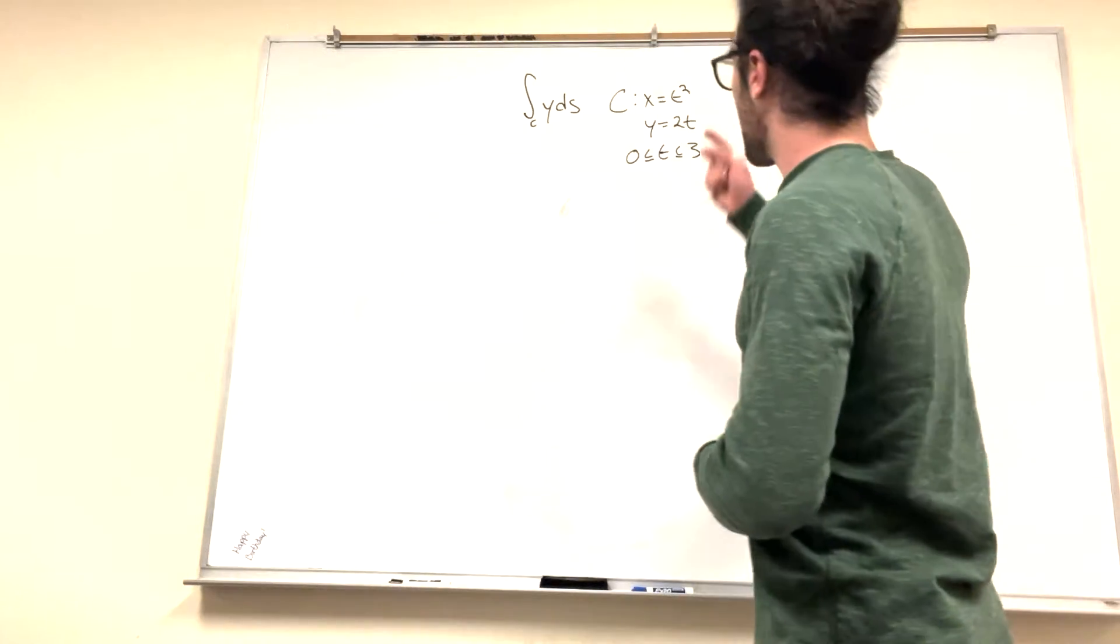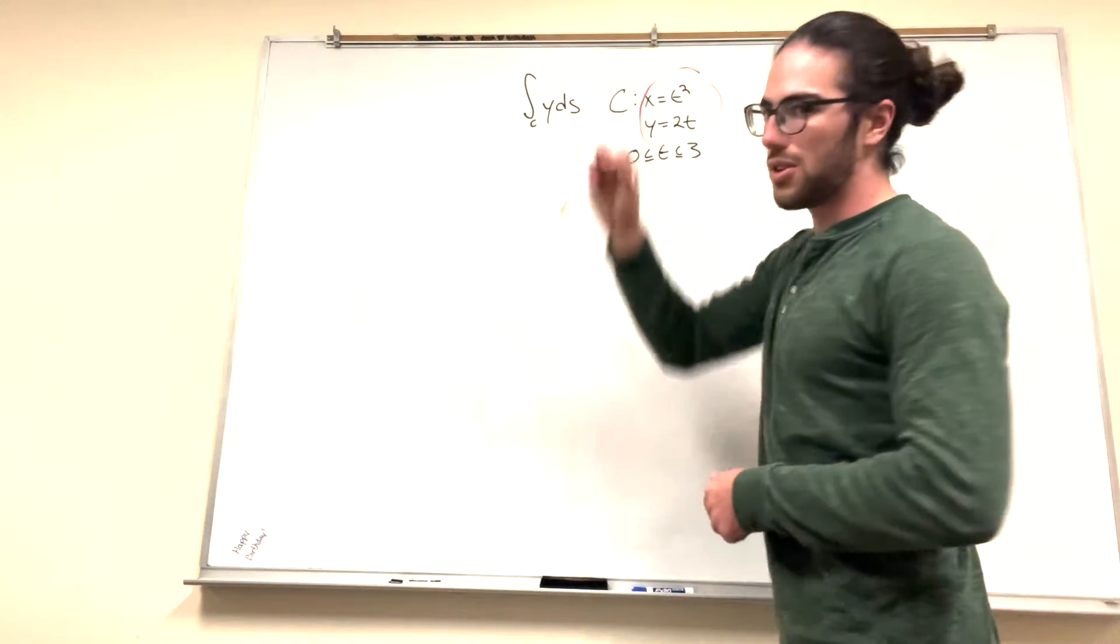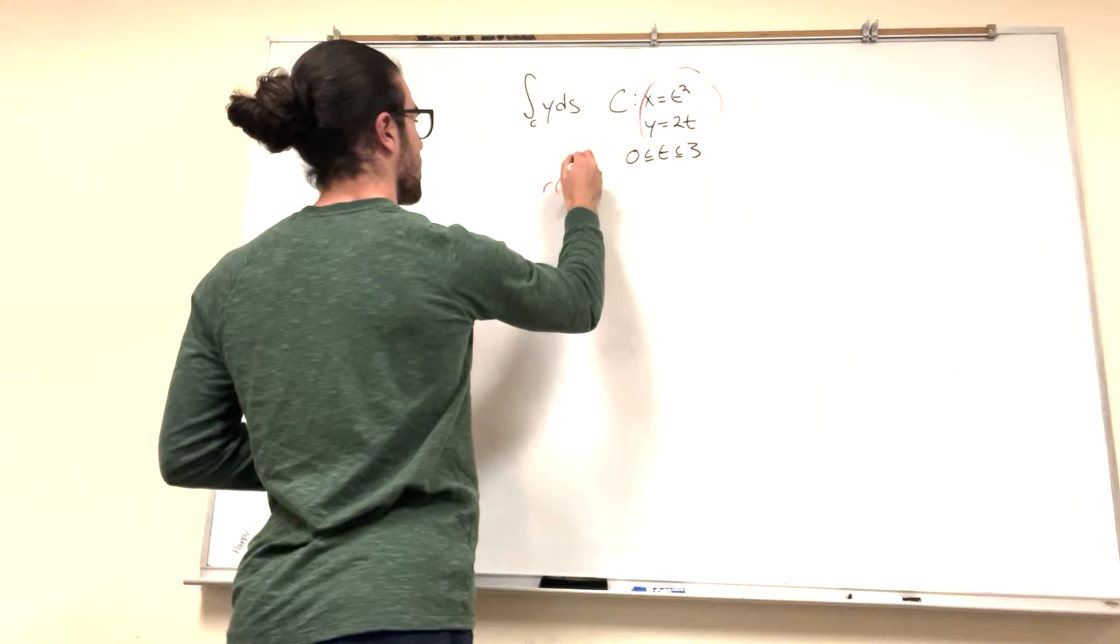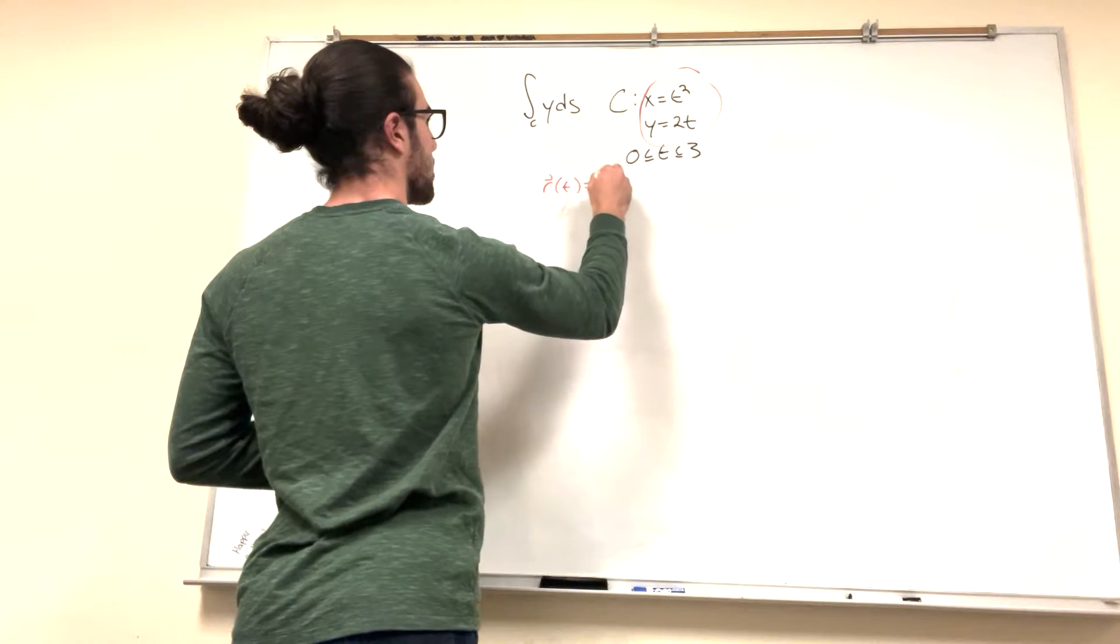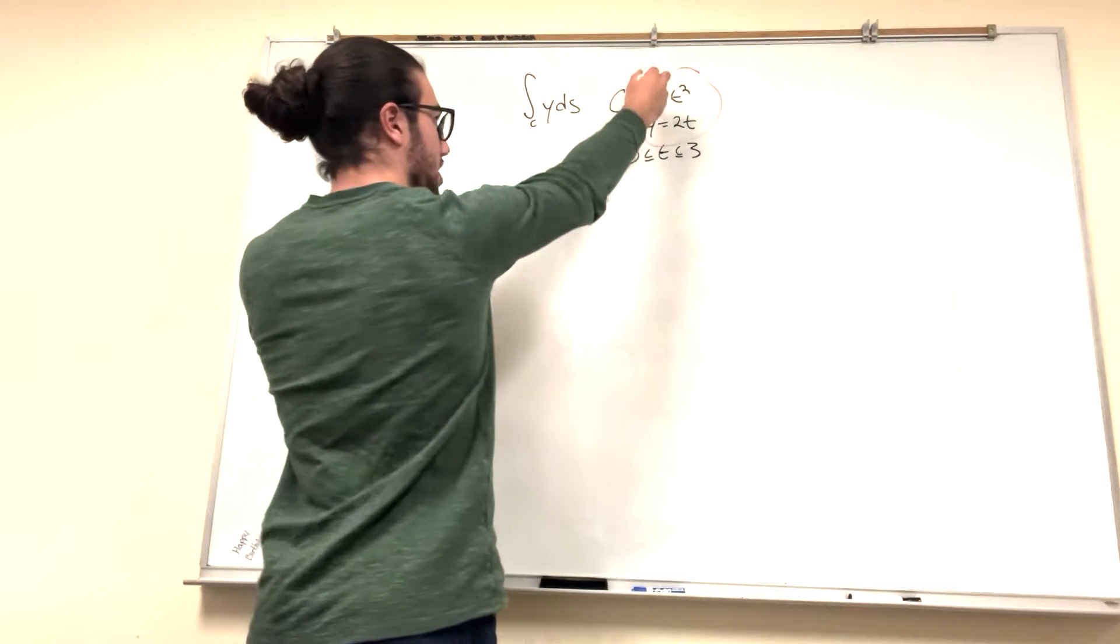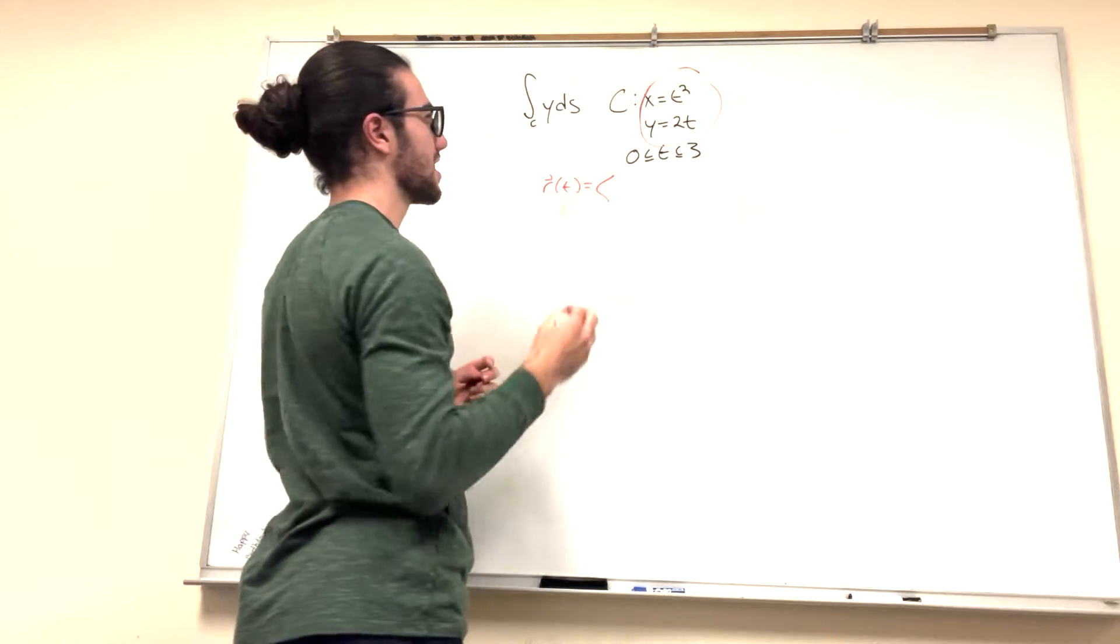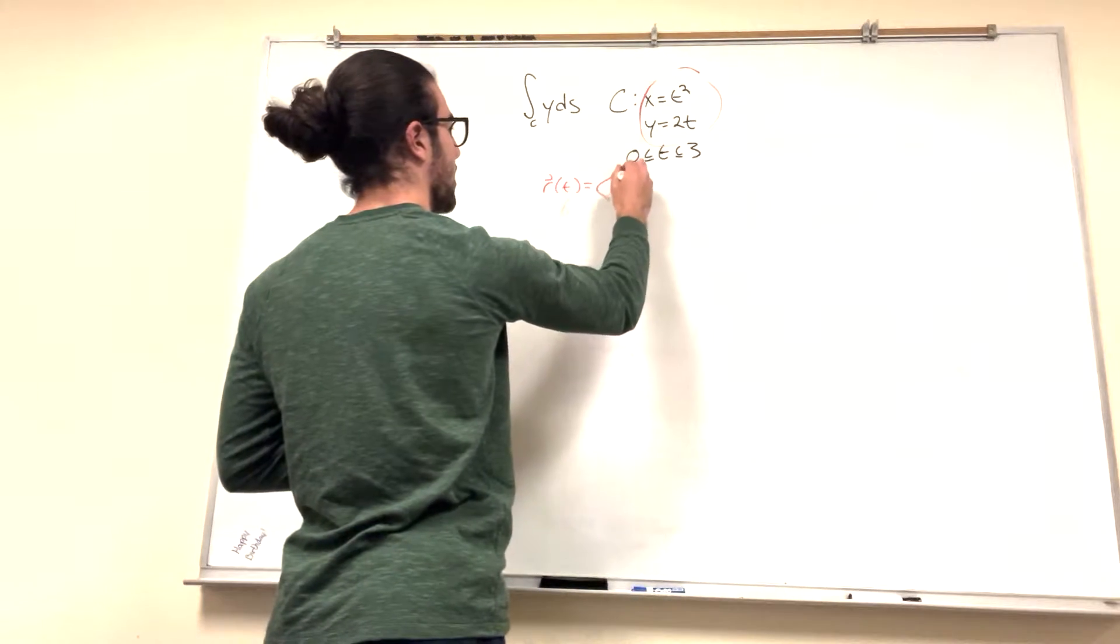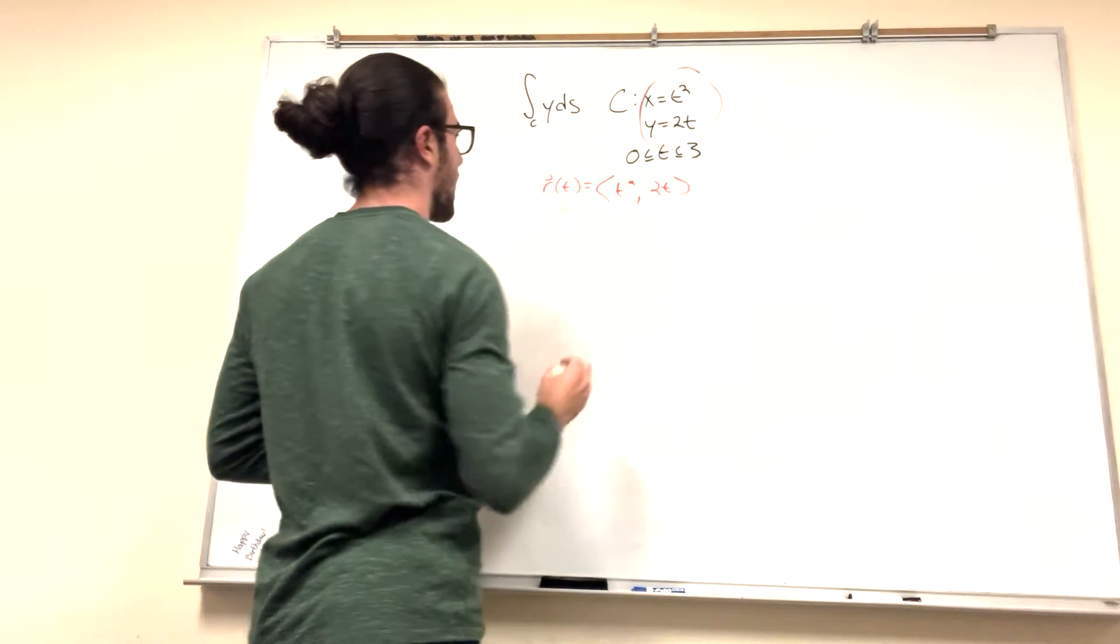Well what we have here is x and y and what we can do is turn this into a vector. So we say r of t, this is our vector. It's going to be equal to the x value. x is a function of t basically. So x of t is t squared and y of t is 2t. Boom like that.